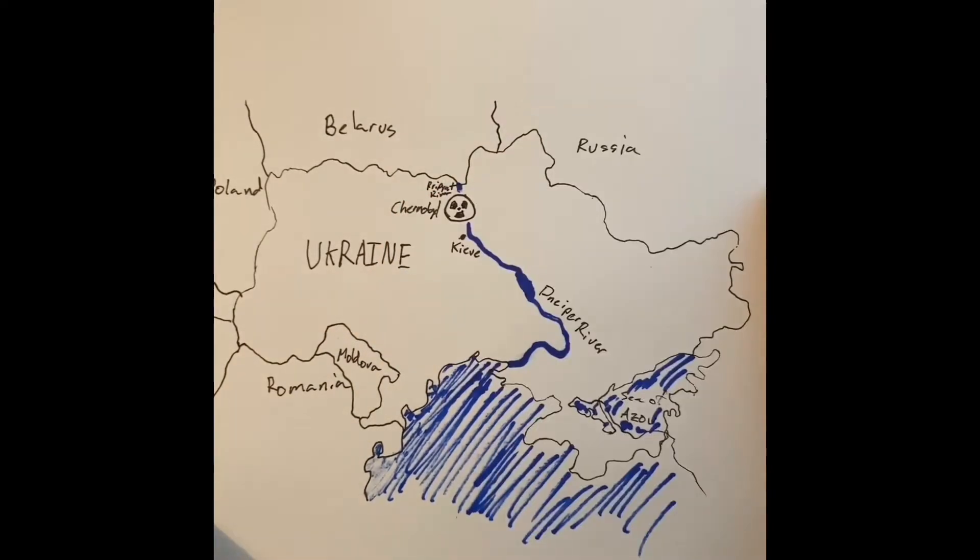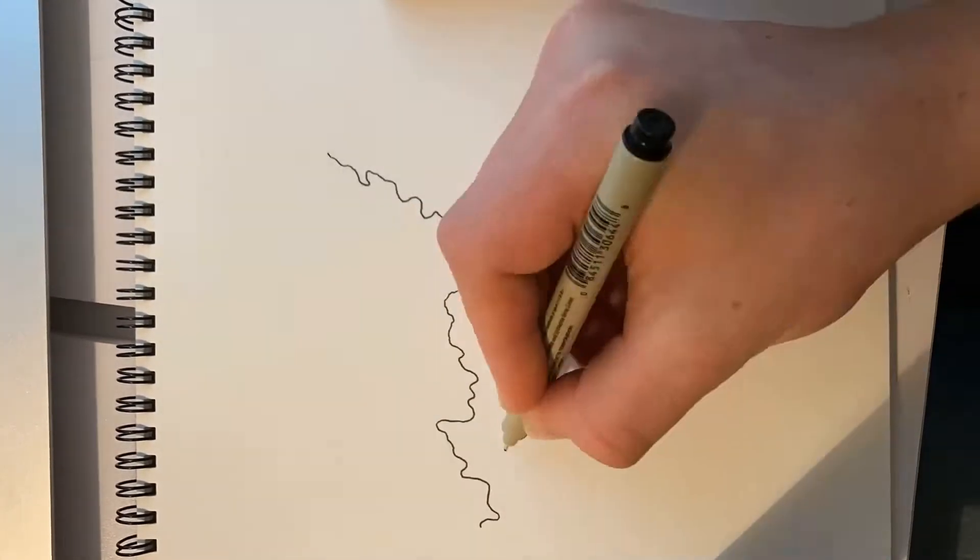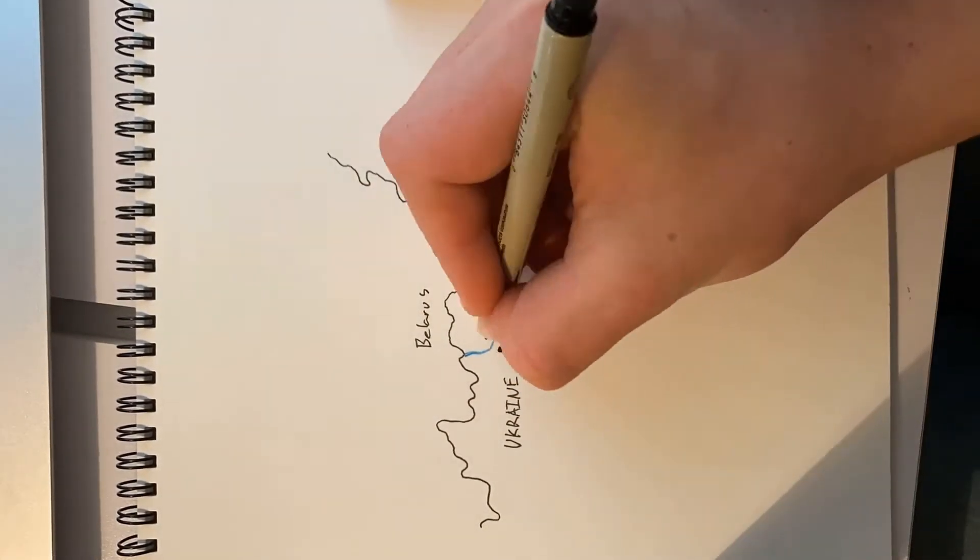The Chernobyl power plant was located in Ukraine, on the Pripyat River. Nearby was the small town of Chernobyl, and just a little bit further was the larger city of Kiev.